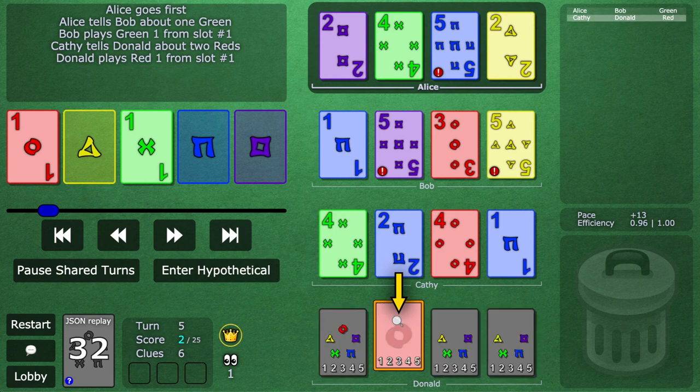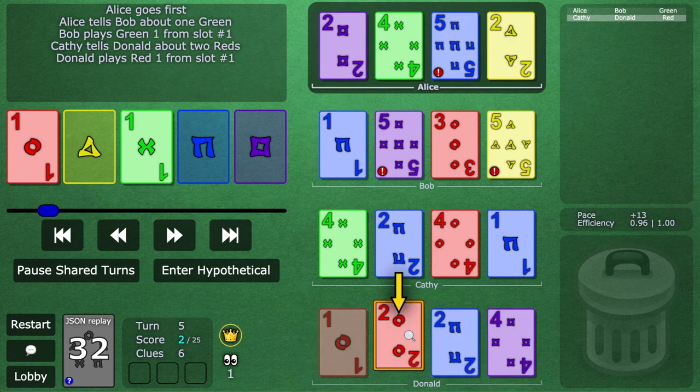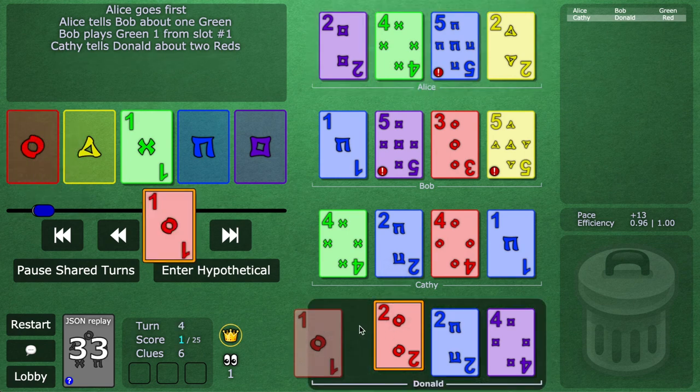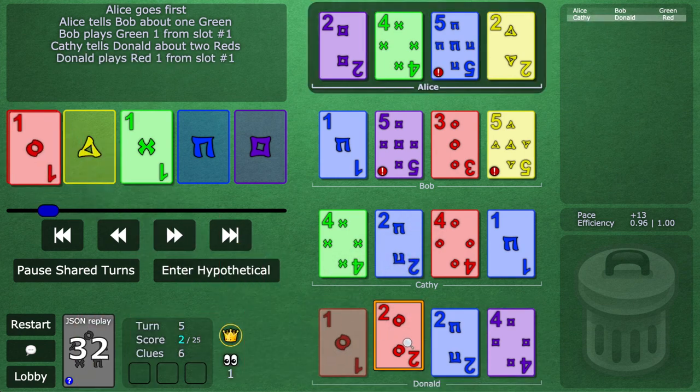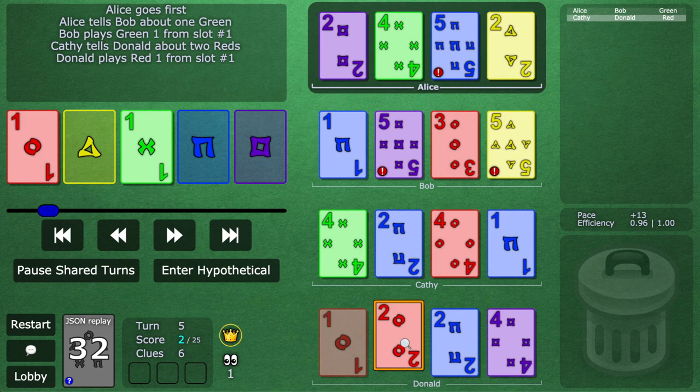He doesn't know what it is but he can hold on to it, and now the whole team should trust Donald will not go and discard this card. So as an effect of this concept, as cards get touched but not focused, you'll start amassing more useful cards that you know some information about and will get played later on in the game.